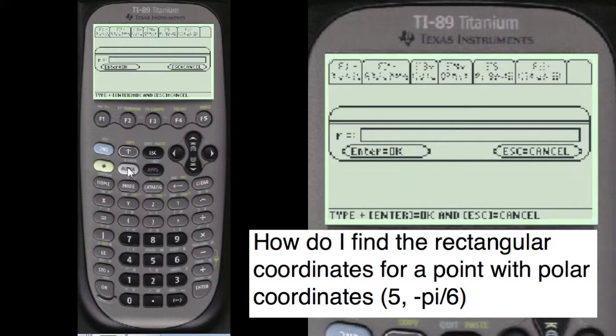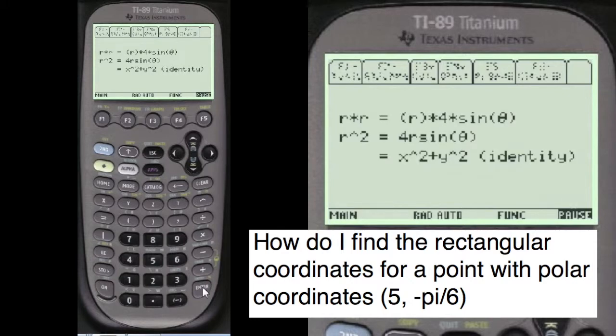You have to press alpha before you enter anything into these entry lines here. So we're going to go alpha. And he wanted to know r, so 4 times sine of theta. That would be the gold key times this key. Close off the parentheses. And so here's the system.